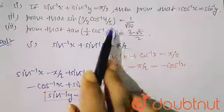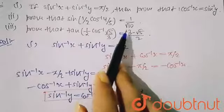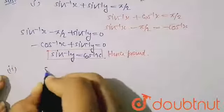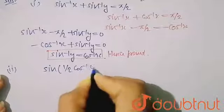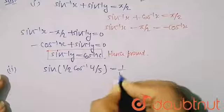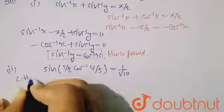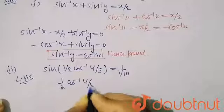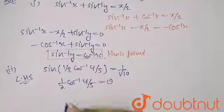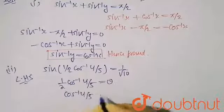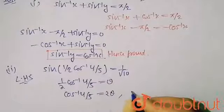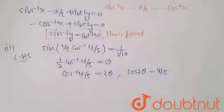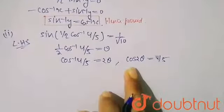For Part 2, we need to prove that sin(½ cos⁻¹(4/5)) = 1/√10. Taking the LHS, let ½ cos⁻¹(4/5) = θ, so cos⁻¹(4/5) = 2θ, which means cos 2θ = 4/5.